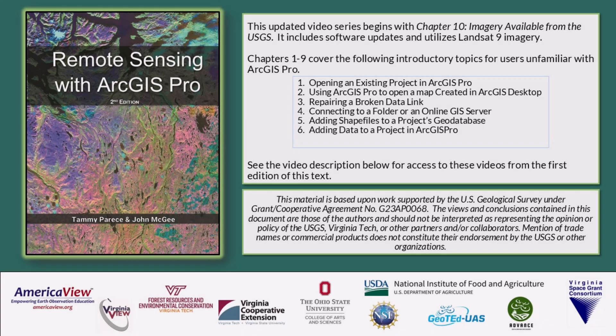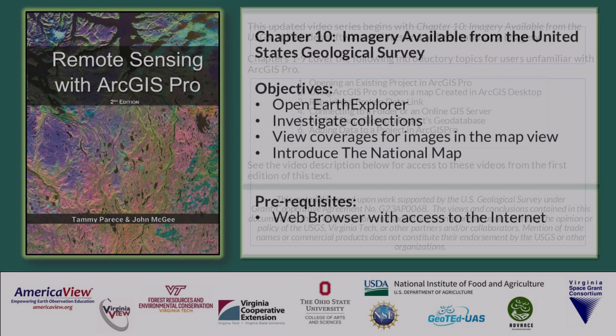This video tutorial series builds on ongoing and previous collaborations and contributions provided by the USDA NIFA, through the ADVANCE Project, the National Science Foundation, through the Geoted UAS Project, the Ohio State University, and the Virginia Space Grant Consortium. This video series is associated with the Remote Sensing with ArcGIS Pro 2nd Edition book. We will use Landsat 9 imagery in this series, and we'll also begin with Chapter 10. Links to resources, including free access to the textbook and to the videos for Chapters 1–9, are available in the video description below.